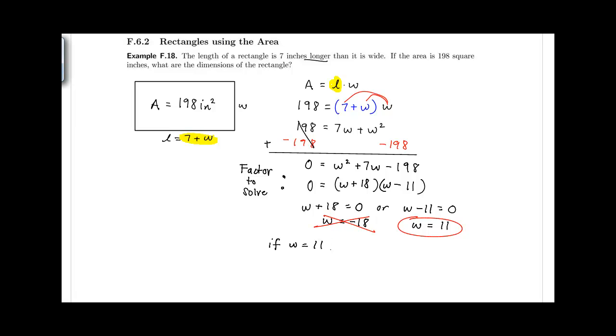If W is equal to 11, then the length is equal to 7 plus the width, which is 11, which is 18. So therefore, the dimensions of this rectangle is 18 by 11 inches. And we can see that the longer side is the length and the shorter side is the width.